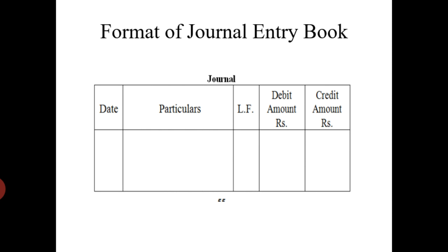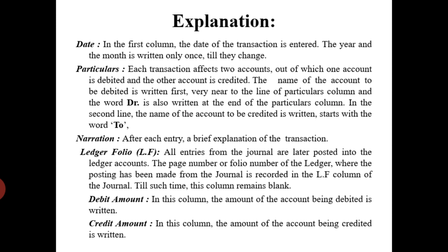This is the format of the journal entry book. The columns have been numbered only to show how the journal is written up. In the date column — the first column — the date of the transaction is entered. The year and the month is written only once until they change, so you will write the year and month at the top of the journal entry.